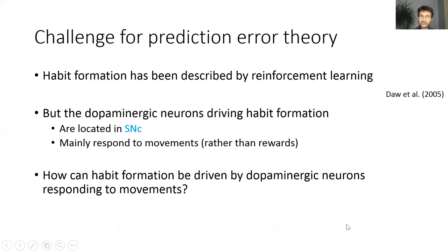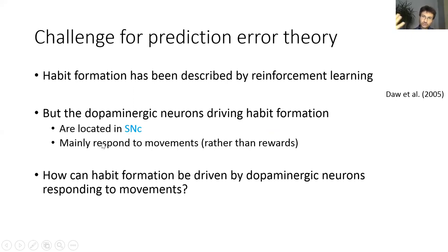How are these results related to standard reinforcement learning theory? It has been proposed that habit formation can be described by reinforcement learning, in a model where habit formation is driven by reward prediction error. But the dopaminergic neurons driving habit formation seem to be located in SNC, and as I showed, SNC neurons mainly respond to movements rather than rewards. This poses the question: how can habit formation be driven by dopaminergic neurons which actually respond to movements?